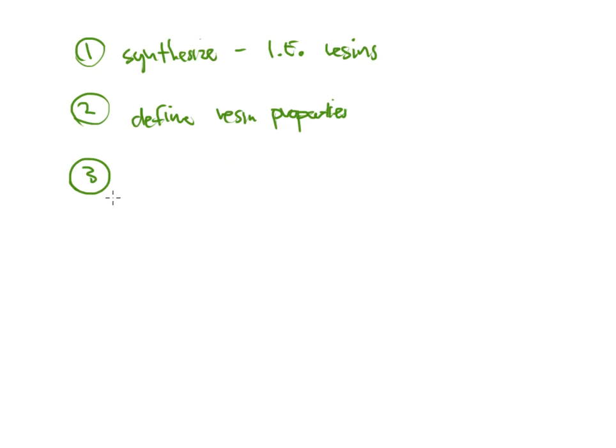So in the lab, what Hamish did was three things. Number one, they wanted to synthesize, a.k.a. make ion-exchange resins. These were the stationary phases, think of them that way, that would separate the ions from each other. Number two, they also wanted to define these resin properties. So play around with them. Let's see what they do. Does one route work better than another? If so, then we need to figure out what those properties are so that way we've got more control to make a better resin in the future.